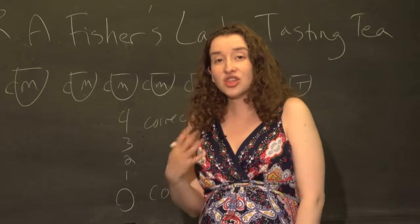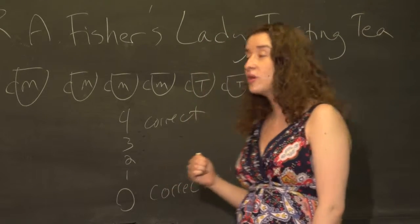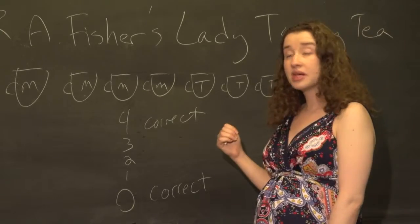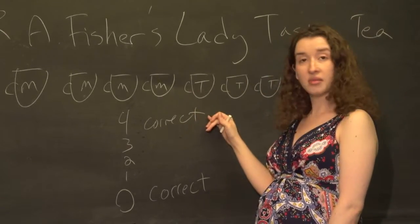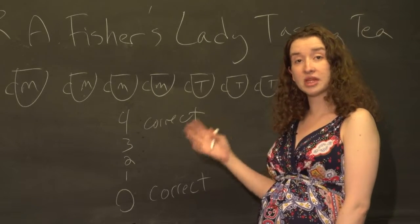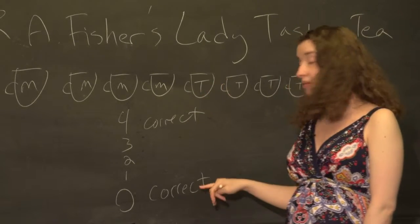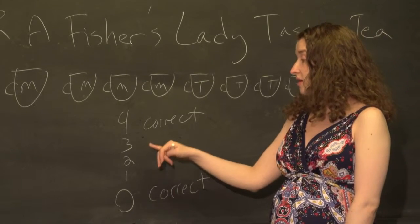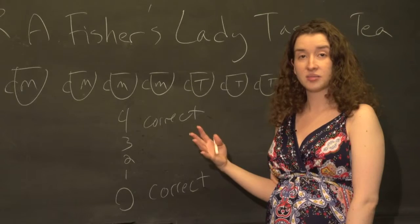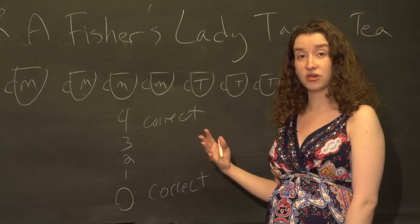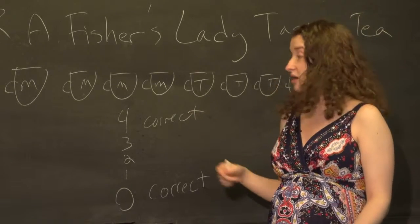If that's true, that she does not have this ability, then we should be able to figure out the probability that when she chooses four cups at random, they'd all be milk, or all be tea. Or we should be able to figure out the probability that any of these numbers of correct cups was the number she actually drew, assuming she's doing it randomly.